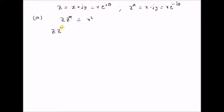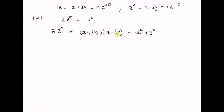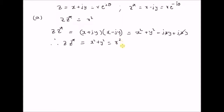Starting with the LHS, we have z into z star is equal to x plus jy multiplied by x minus jy. The product is x squared plus y squared — the product of jy with minus jy is y squared. We also have x times minus jy which is minus jxy, and then j times x into y, which cancels. Therefore z into z star is equal to x squared plus y squared, which is equal to r squared by definition.